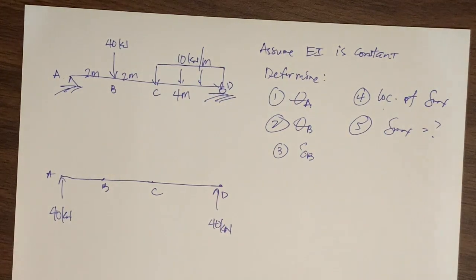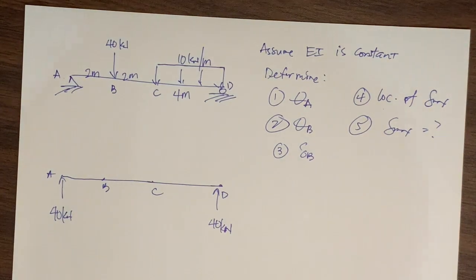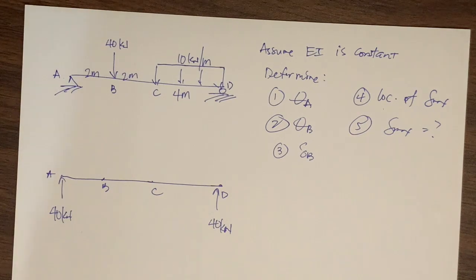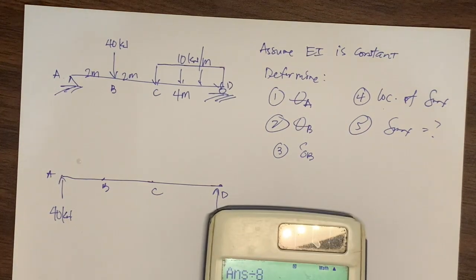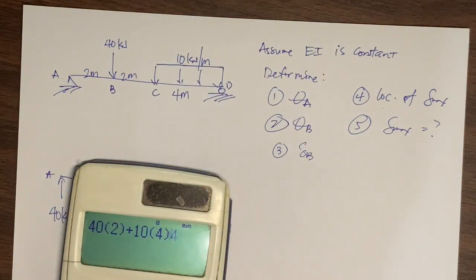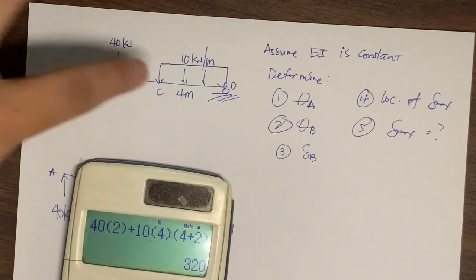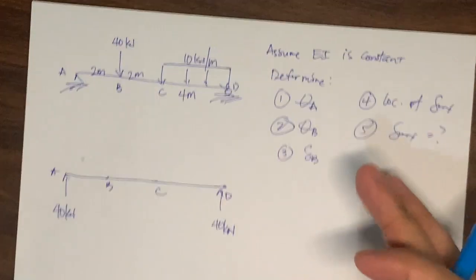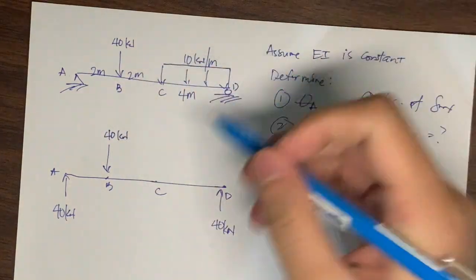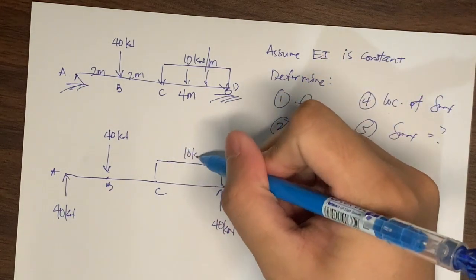Conventionally, we solve for both reactions as a check. Taking moments from the other side: 40 times 2 plus 10 times 4 times (4 plus 2), divided by 8, also gives 40 kilonewtons. Now we have the concentrated load of 40 kN and the distributed load of 10 kN/m confirmed. We will use the Macaulay method to create the moment equation.